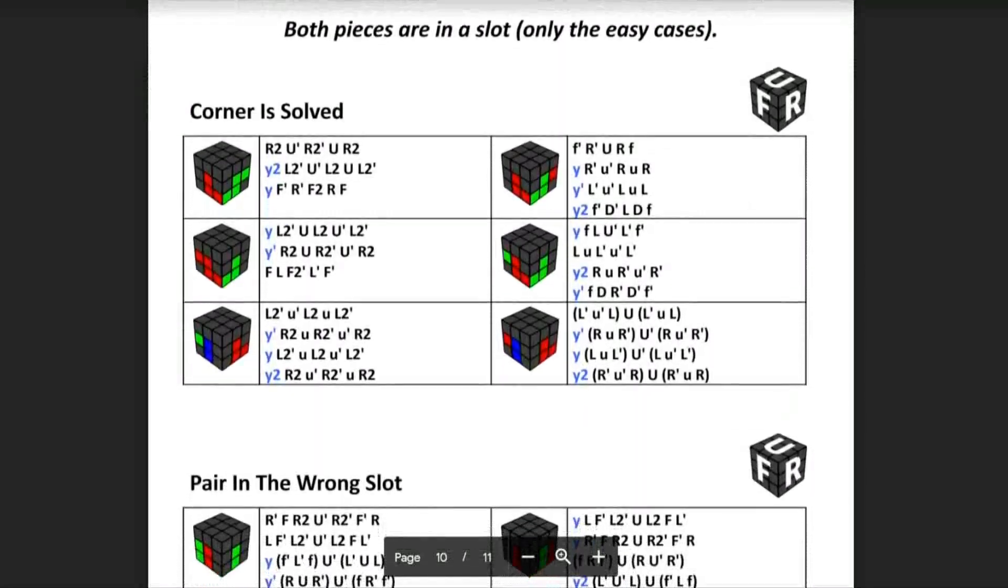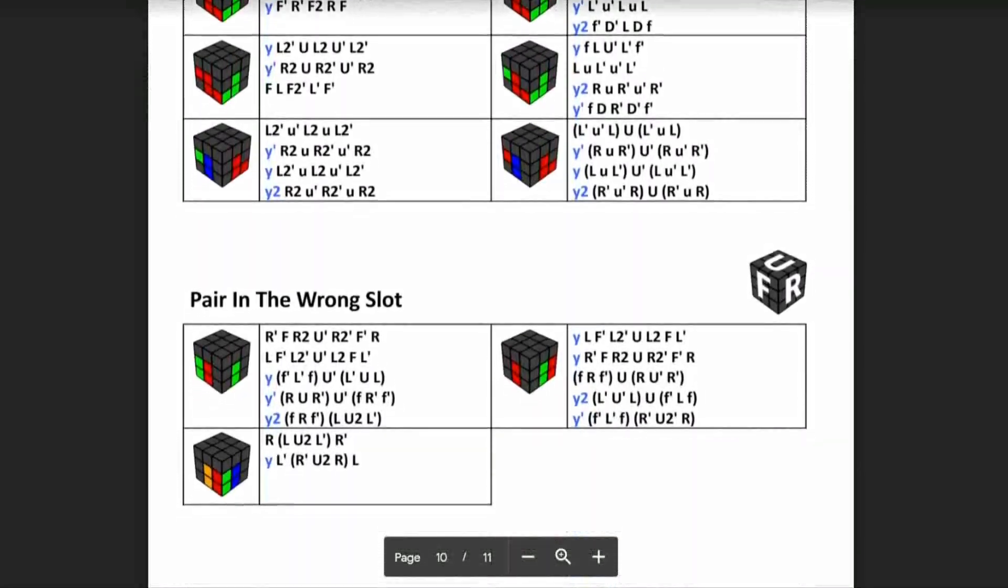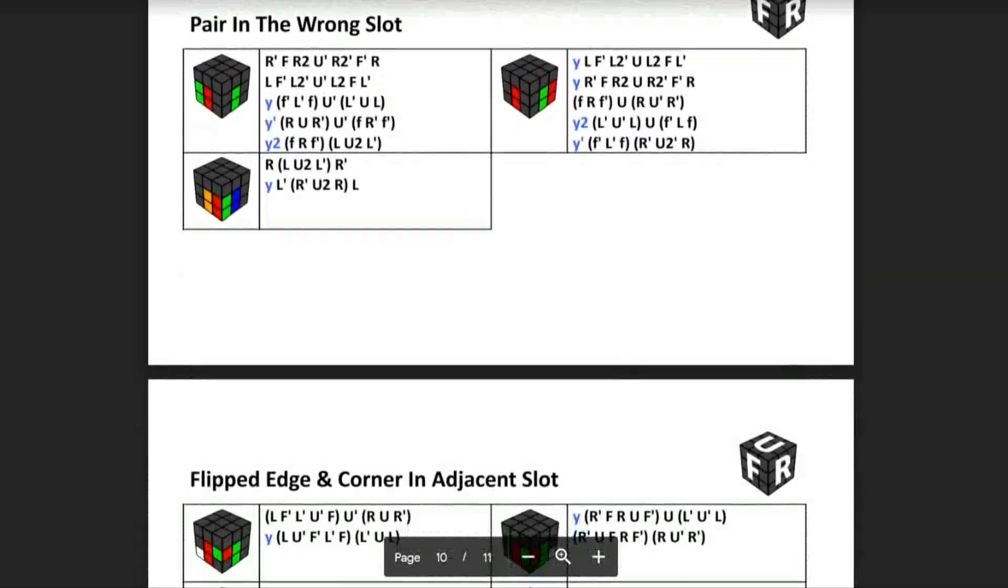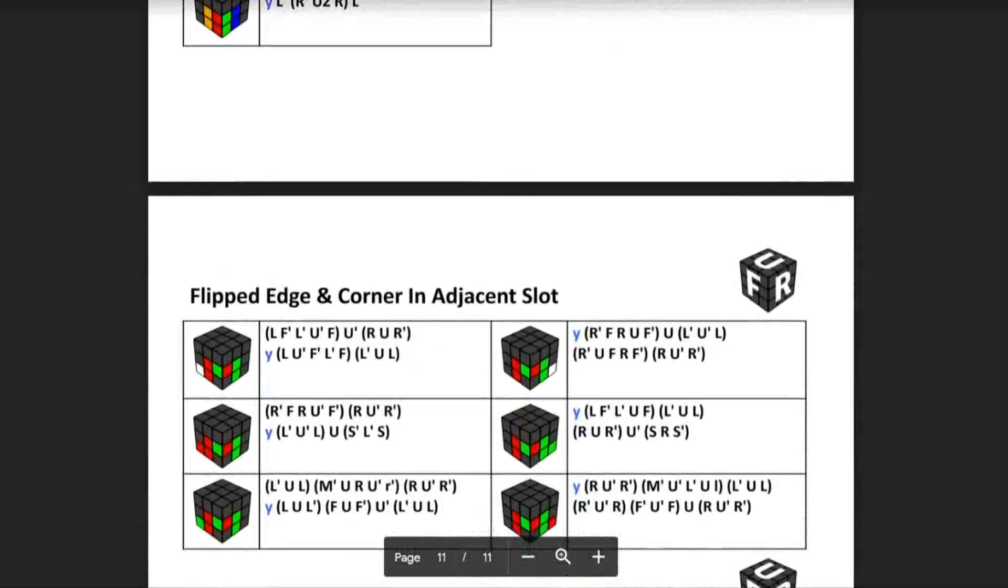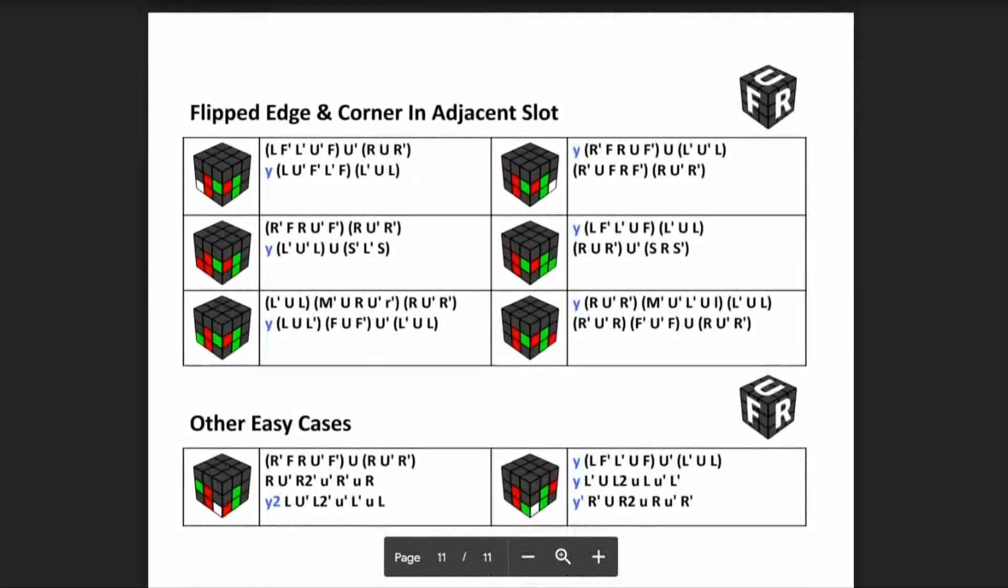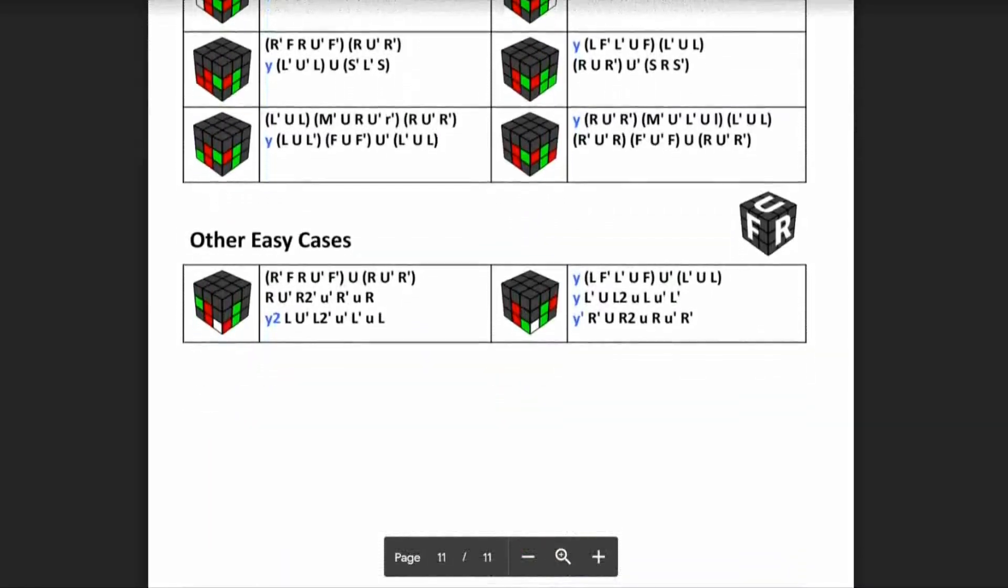Then there's section three, what I call expert F2L, and this is where you have two pieces that are both slotted. The actual number of possible cases is too high, and they are way too hard to recognize, so I only include the ones here that are either easy to recognize or easy to solve.